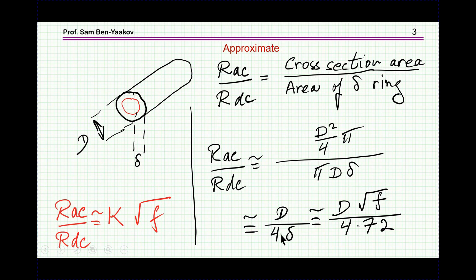And therefore we find that the RAC over RDC is D, this is the diameter, times square root of F over 472, this form of an expression for RAC over RDC.